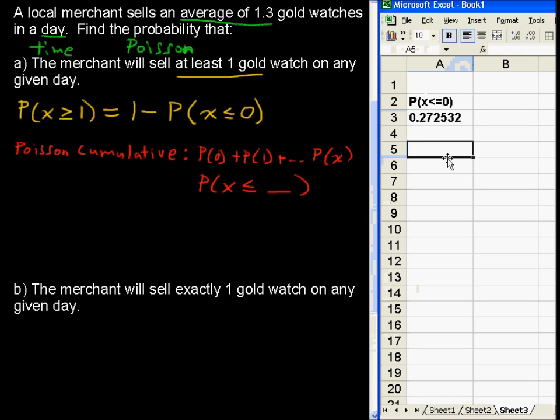I'm going to do the probability that X is greater than or equal to one. That equals—I'm just going to use Excel here—equals one minus and I'm going to choose this cell.